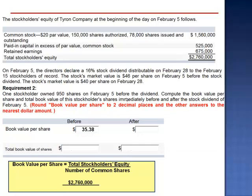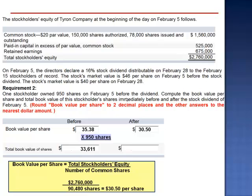After the stock dividend, this same $2,760,000 company is now being claimed by 90,480 shares — 78,000 shares plus the 12,480 shares distributed in the form of a stock dividend. $2,760,000 divided by 90,480 shares drops the book value per share to $30.50. But our stockholder hasn't lost anything, because previously our stockholder owned 950 shares, which means those 950 shares were claiming a total book value of $33,611.